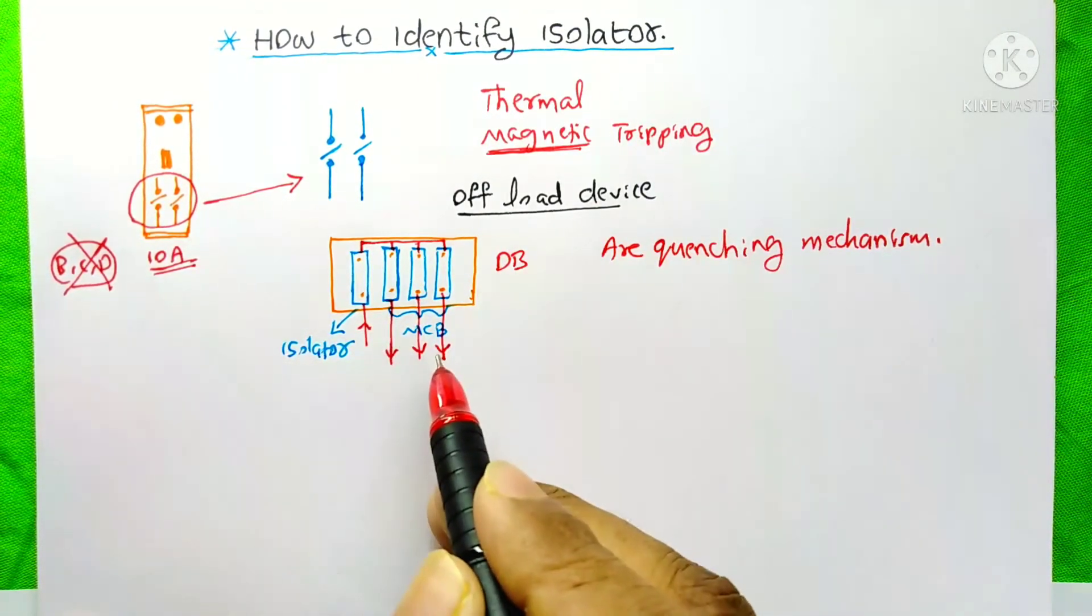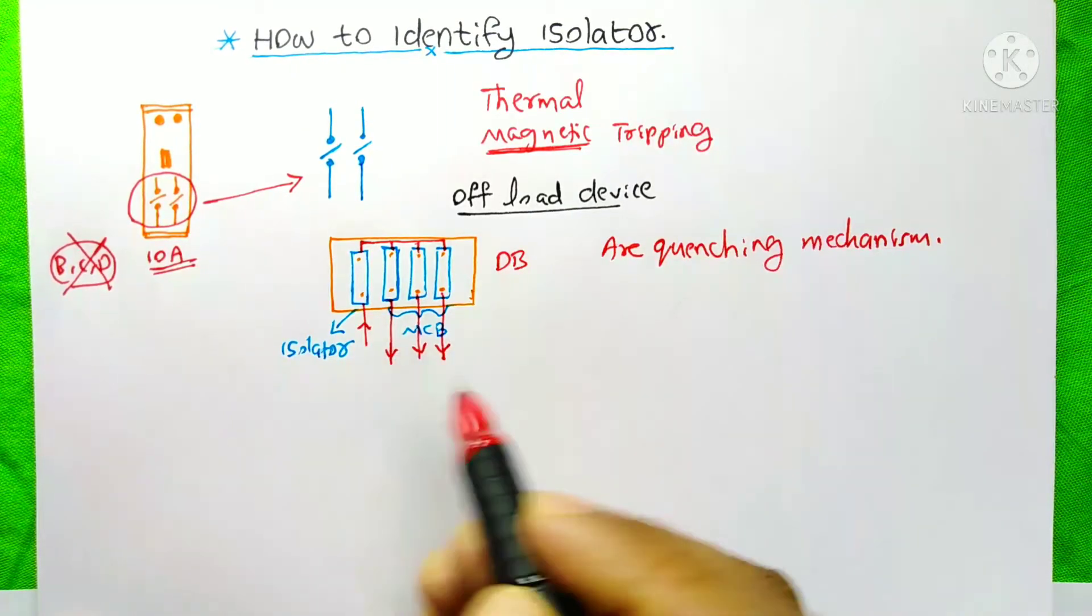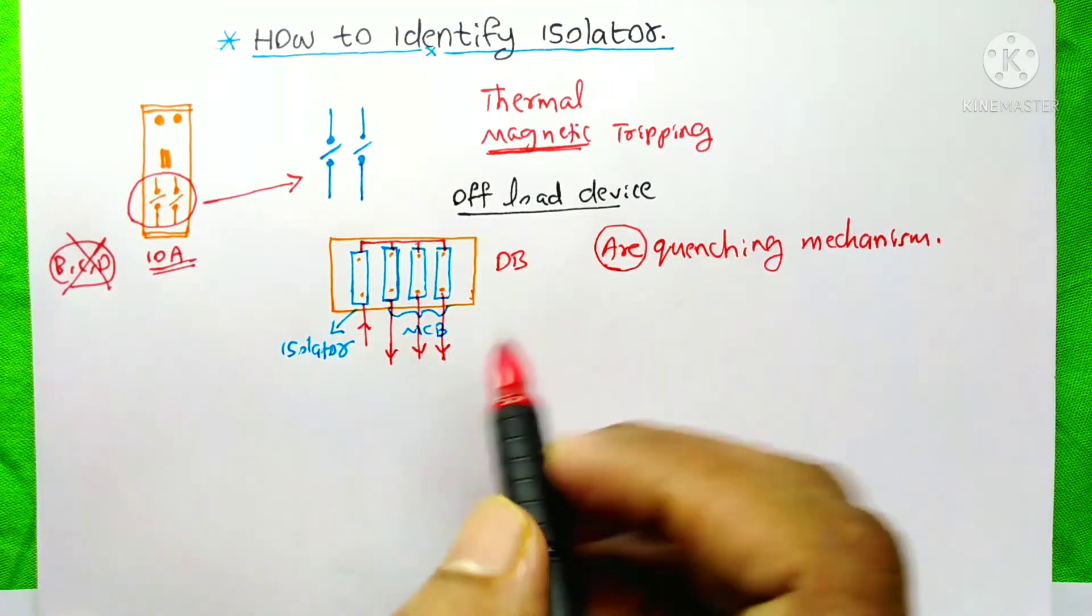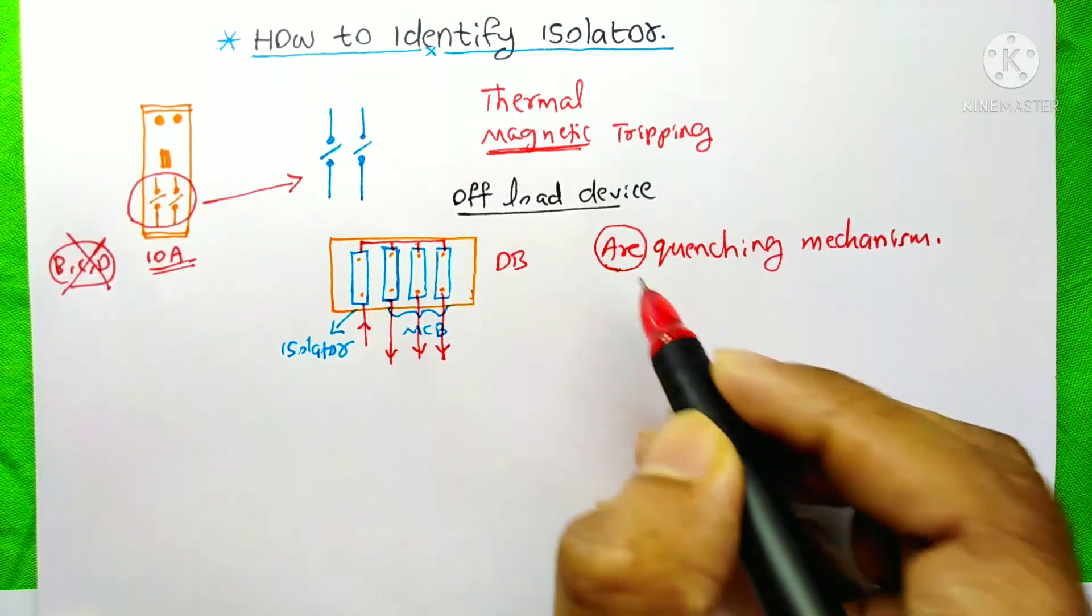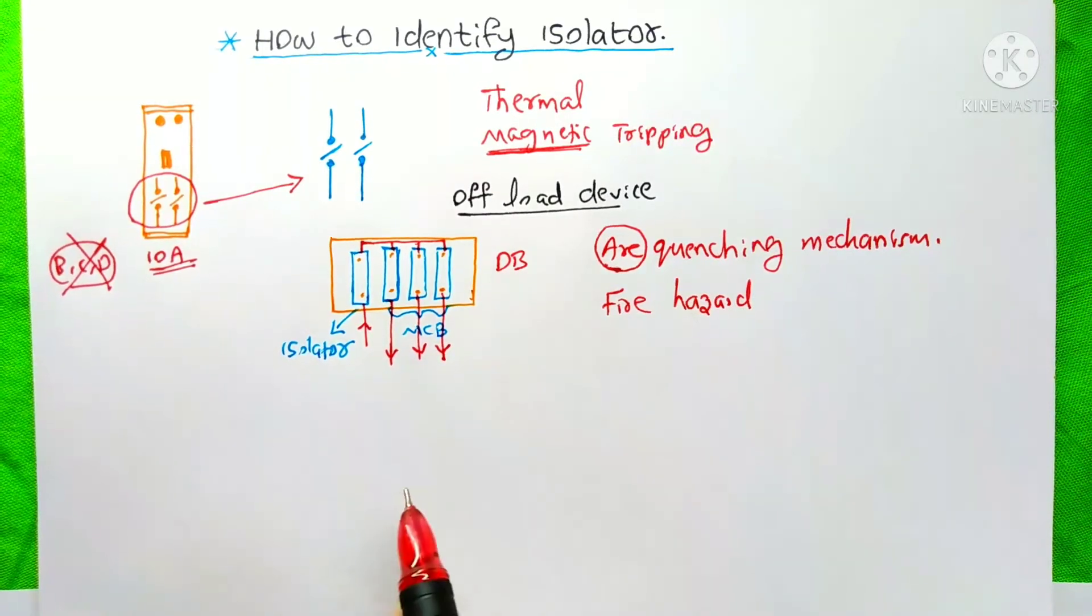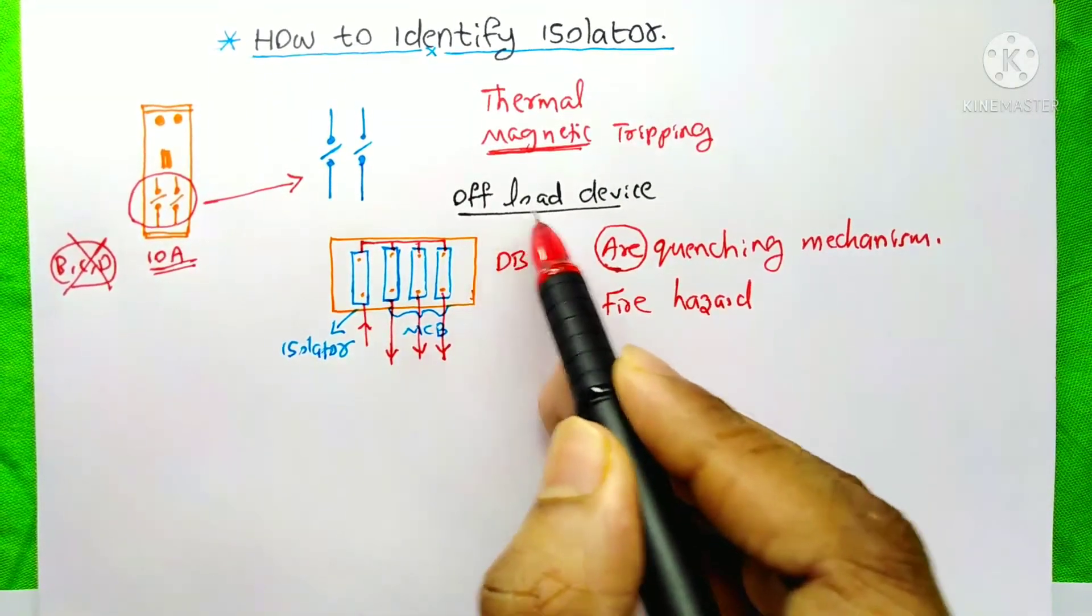If the current is existed on both sides of the isolator, that means at the condition of when the loads are on the running, at that time if you switch off this isolator, then at that time the arc will be formed and it will cause a fire hazard. That's why we call it as an off-load device.